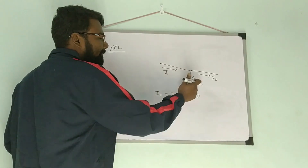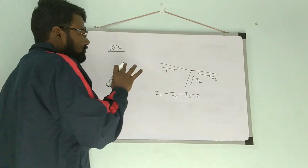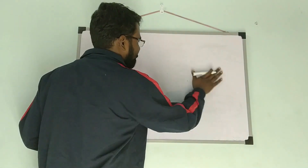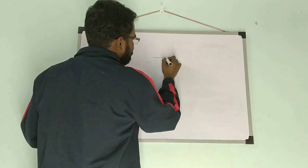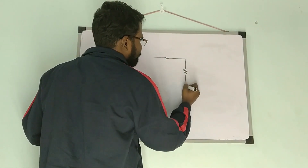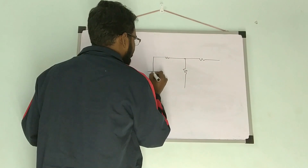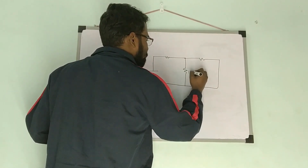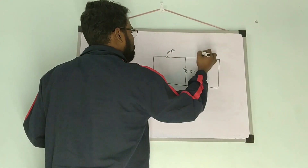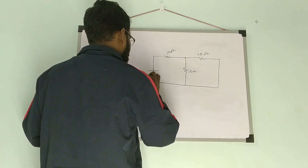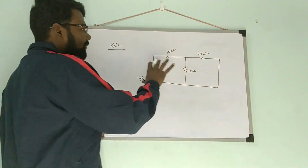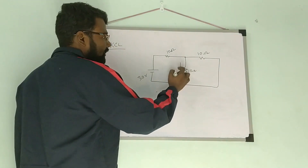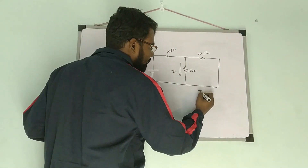I1 plus I2 minus I3 is equal to zero. Let's take an example for better understanding. Suppose there is a network and you have to find the current through the 10-ohm resistance. Suppose this is I1 — so you have to find I1.